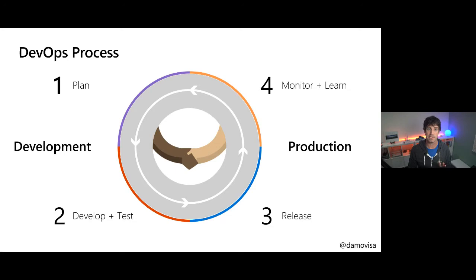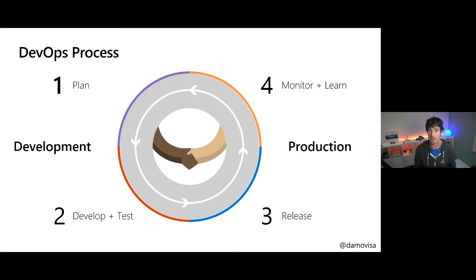What we really want is something similar for machine learning projects. We want a way for data scientists to focus on getting a better predictive model out, collaborating effectively with the rest of their teams, automating training runs, deploying in a nice automated safe way, monitoring what happens in production and the accuracy of those predictive models, and feeding that back into planning. So we have this cycle that allows data scientists and machine learning experts to focus on what they want to focus on.